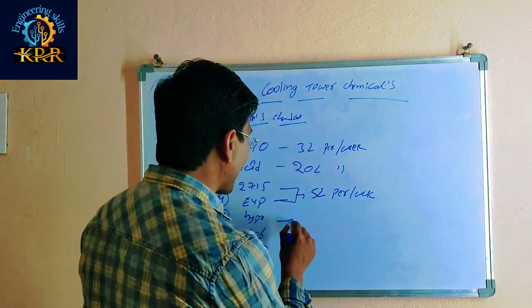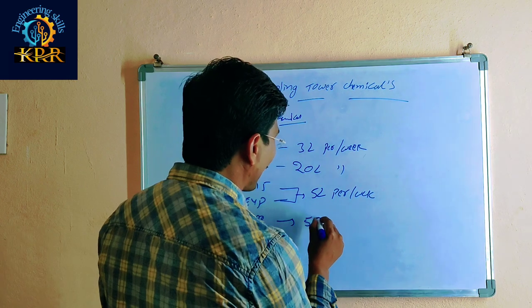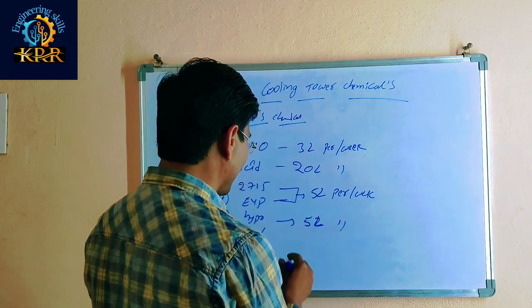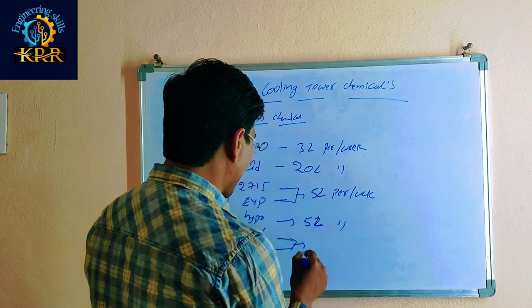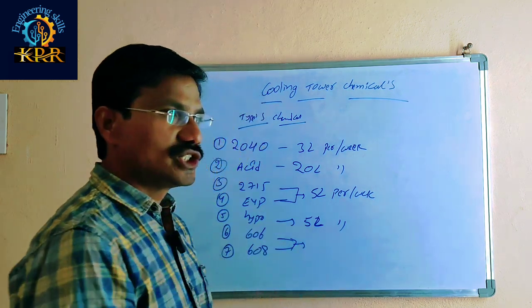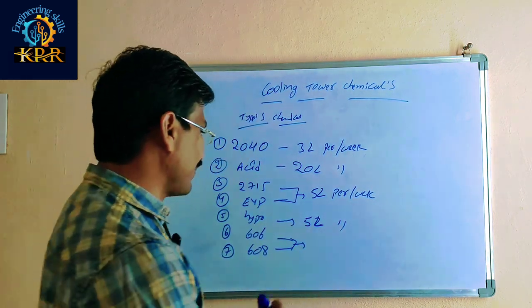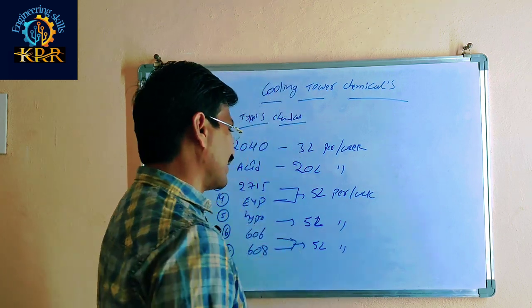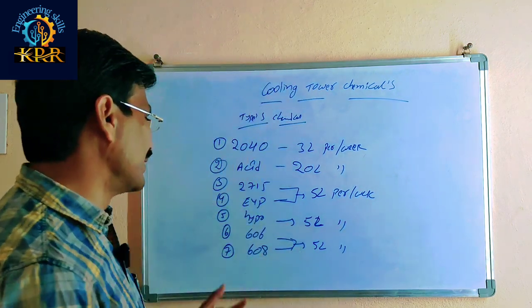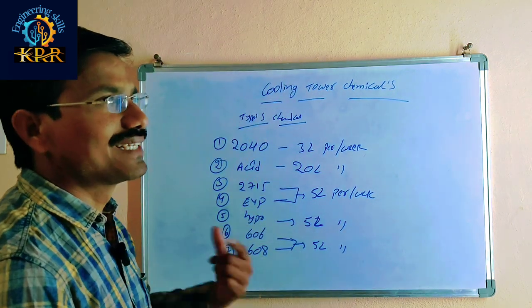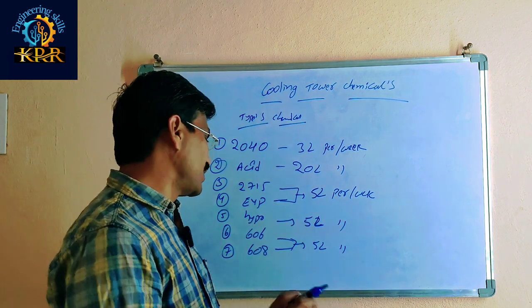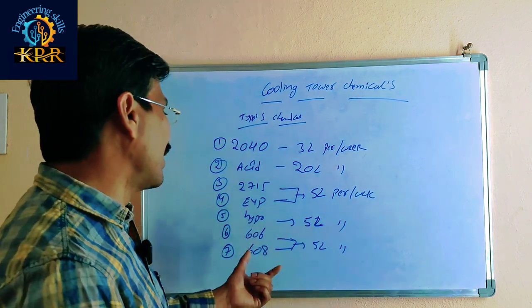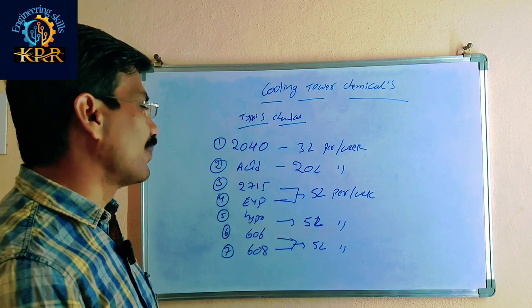Hypo is also five liters per week. 606 and 608 chemicals are also five liters per week each, and these two are also used alternately — 606 one week and 608 the next week.